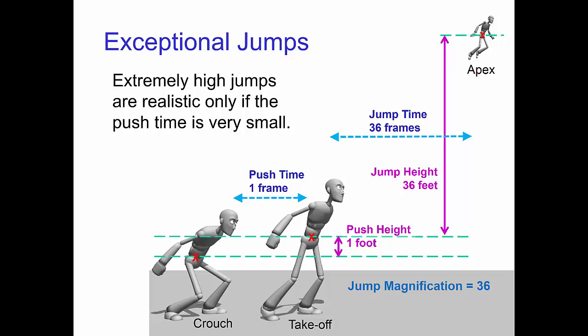Let's do an example. A jump height of 36 feet happens to be a jump time of 36 frames. You can find this from the tables or the formulas in the other videos.